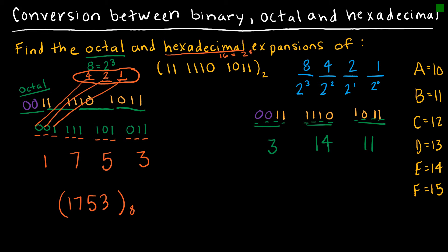So 3, 14, 11. I just have to use the letters that correspond to each of those. 11 is the same as B, and 14 is the same as E. So my solution is 3, E, B, base 16.